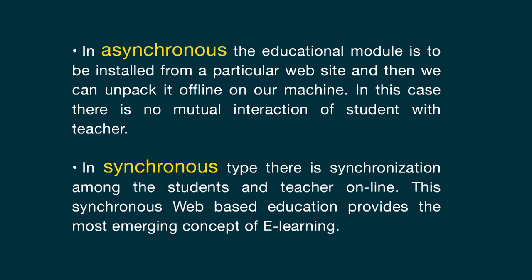In web-based education, there are two different types: asynchronous and synchronous learning. In asynchronous learning, the education model is installed from a particular website and can be accessed offline on a local machine — in this case, there is no mutual interaction between students and teacher. The second type is synchronous, where there is a synchronization among students and teacher online. This synchronous web-based education provides the most emerging concept of e-learning.